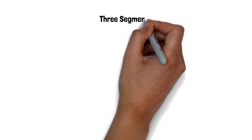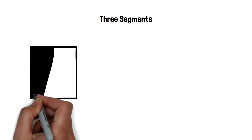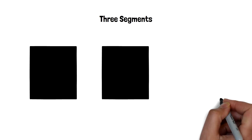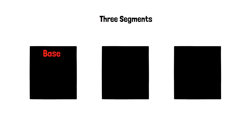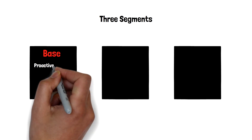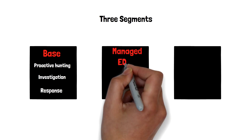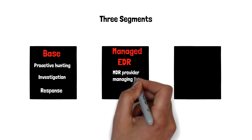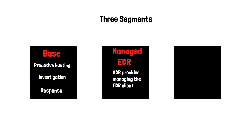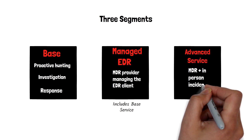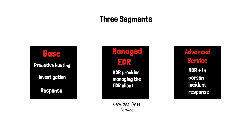Because the MDR market is still somewhat being defined, providers can vary greatly in the services they provide. Forrester groups four segments that measure the level of capability provided by MDR providers today. The first level is base level services, including proactive threat hunting, investigation, and response. The next level is a managed EDR service, where the MDR provider manages the EDR client and provides those base level services on top. The advanced service will include incident response as a service, which also offers traditional boots-on-the-ground personnel to assist with incidents.